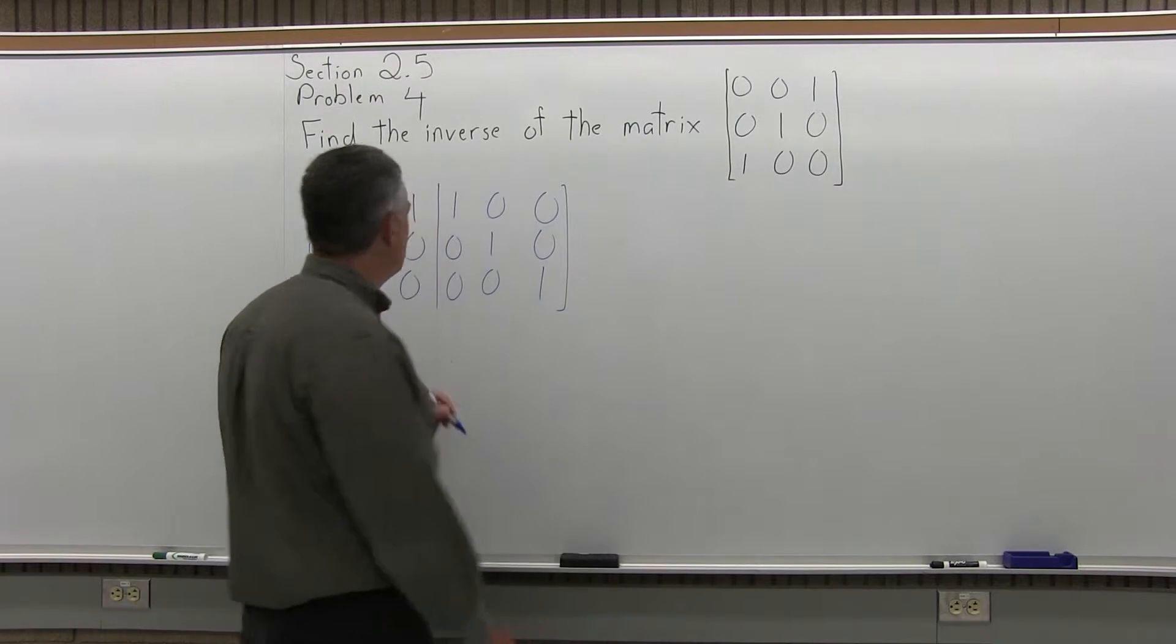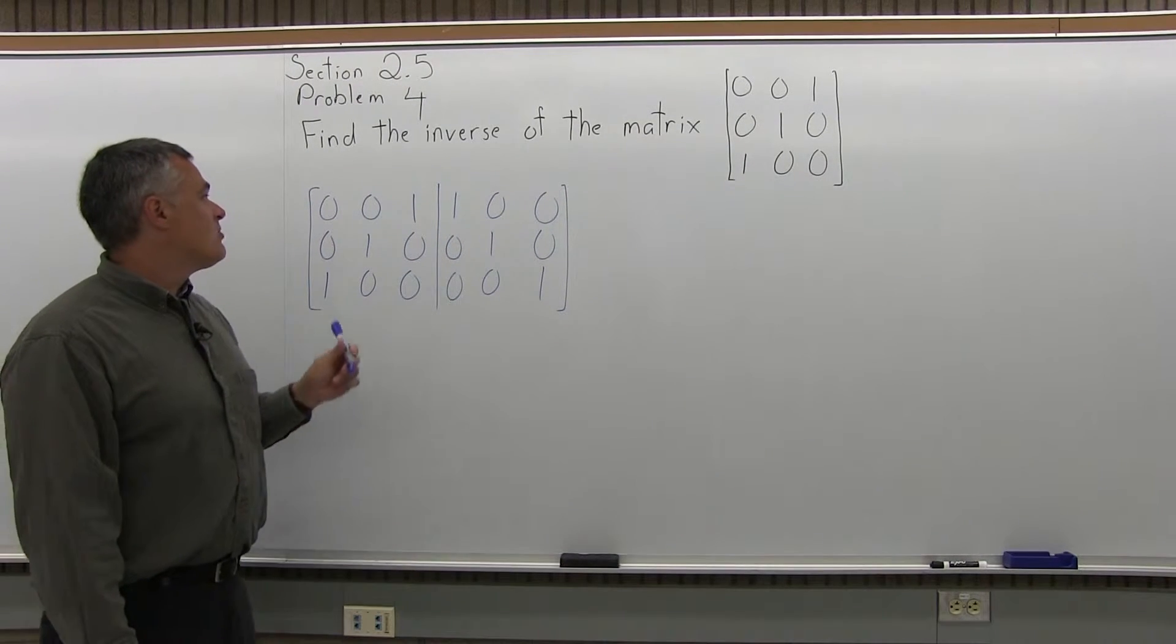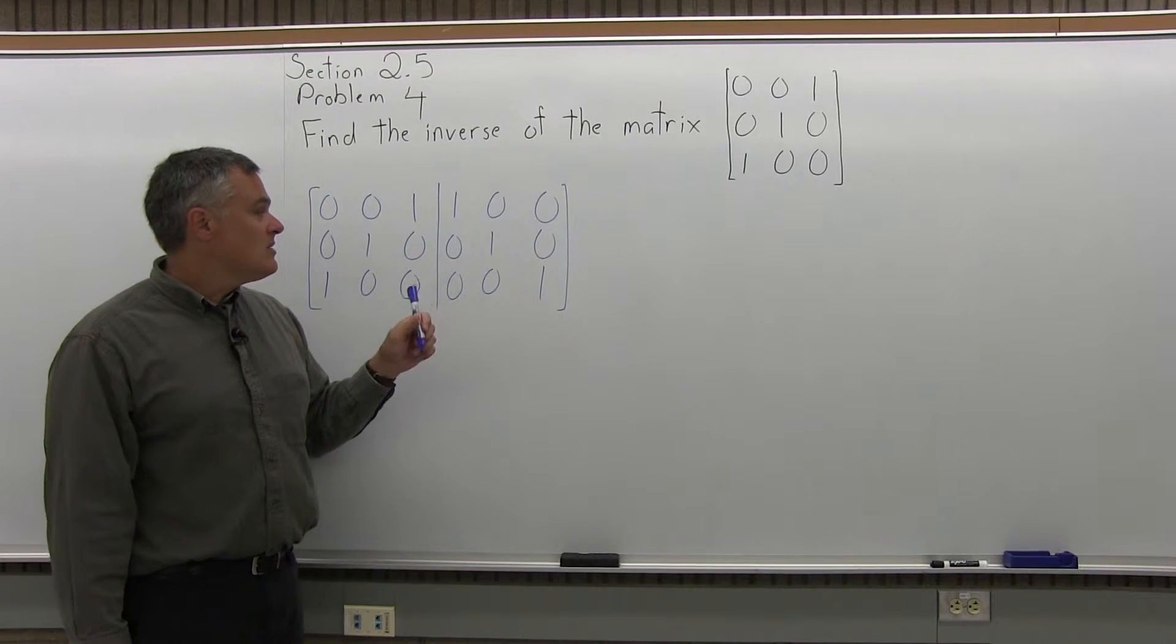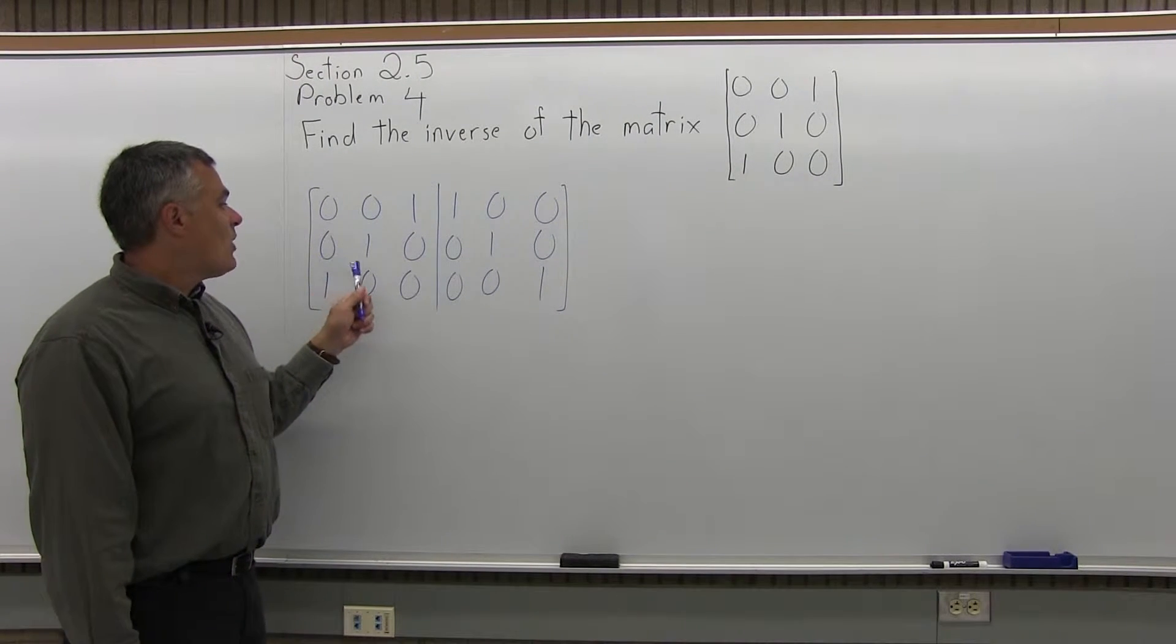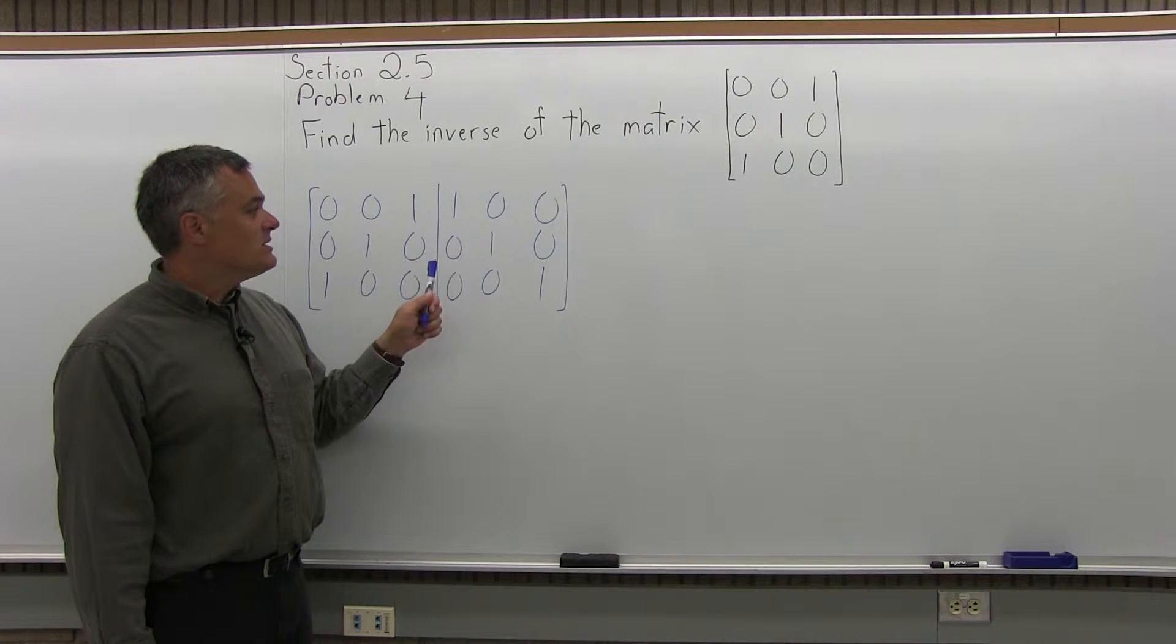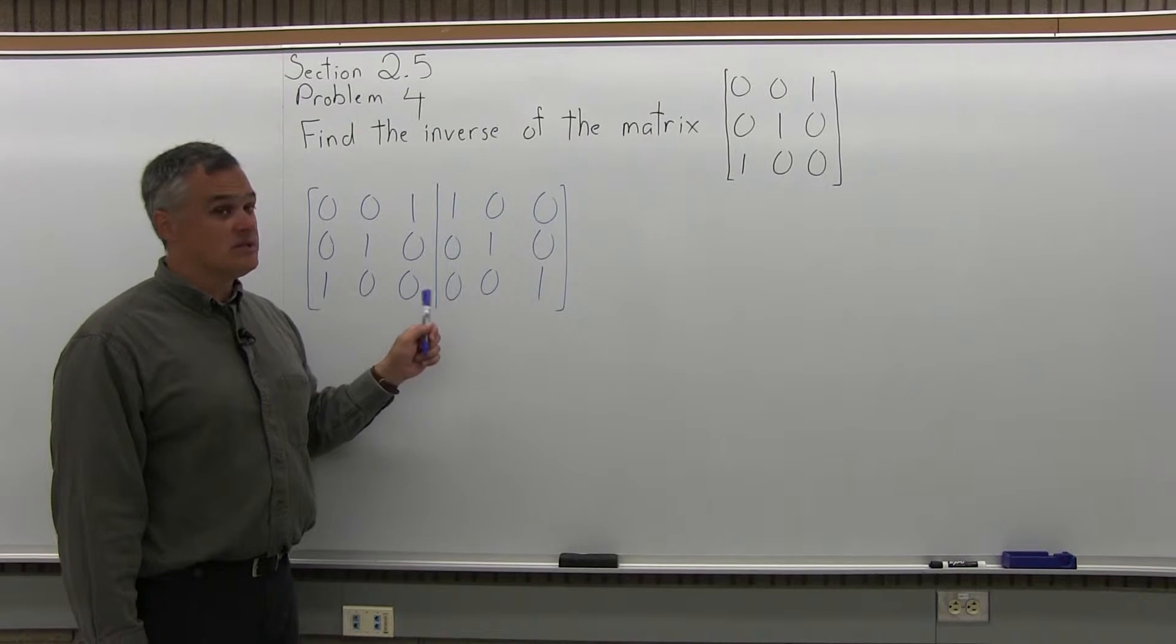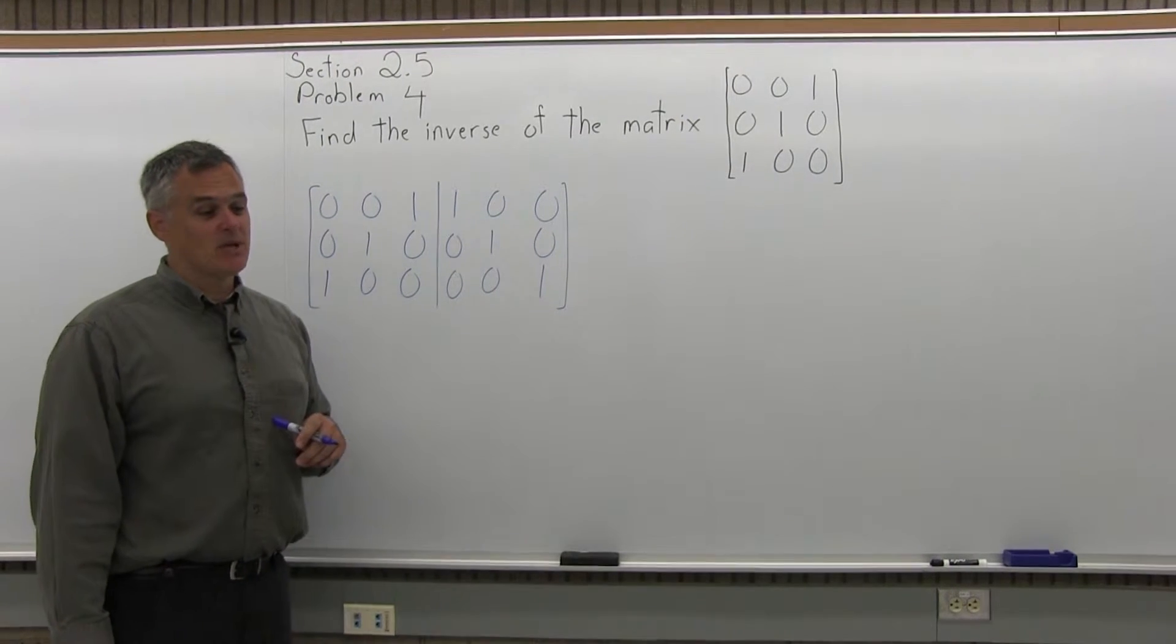So that gives us a really big wide matrix. The top row is 0, 0, 1, 1, 0, 0. The middle row is 0, 1, 0, 0, 1, 0. And the bottom row is 1, 0, 0, 0, 0, 1. That's a big matrix.